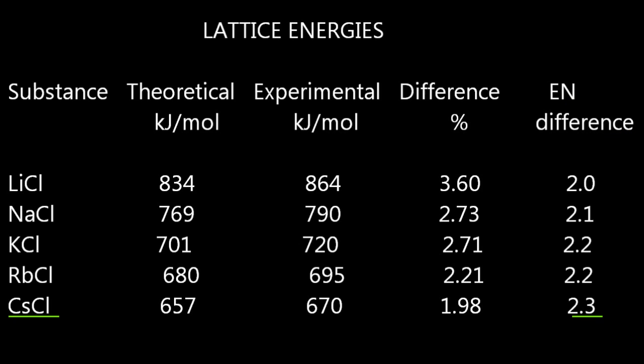So cesium chloride is the most ionic, because the difference between the electronegativity of cesium and chlorine is the biggest, and so the electron's more likely to transfer.